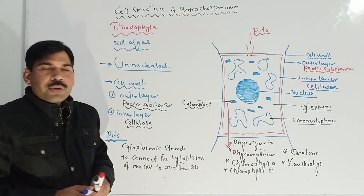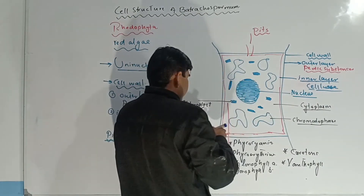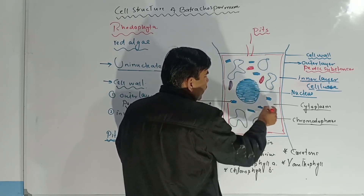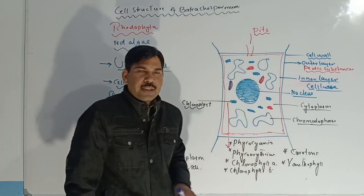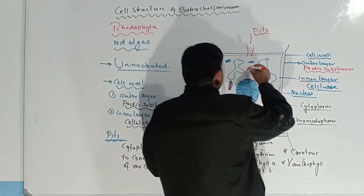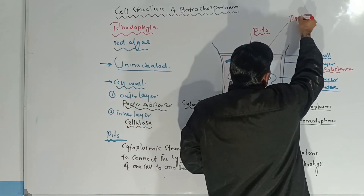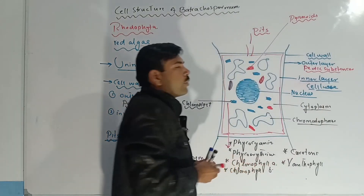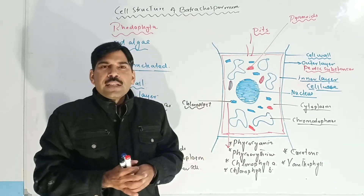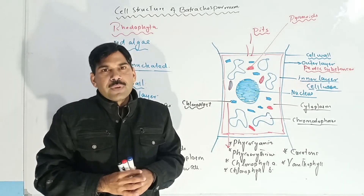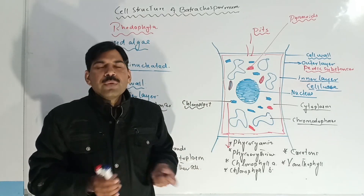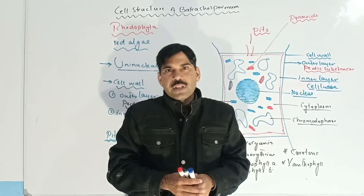Now we are going towards some other structures. These structures are shown in red color for illustration purposes only. These structures are known as pyrenoids. Pyrenoids are the structures which are used for storing reserved food material.